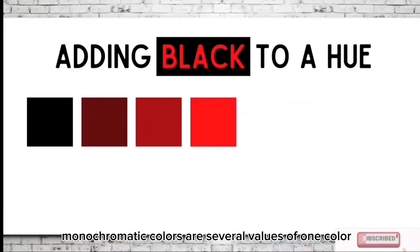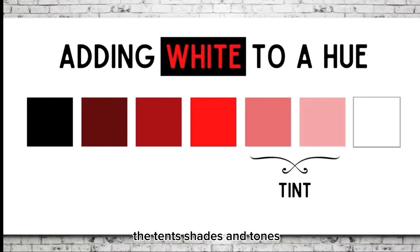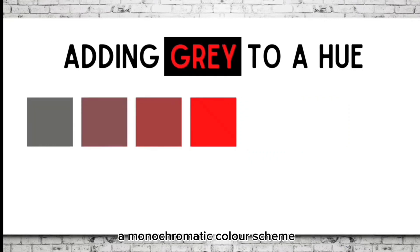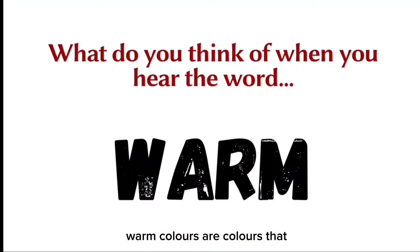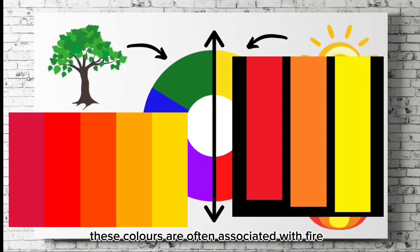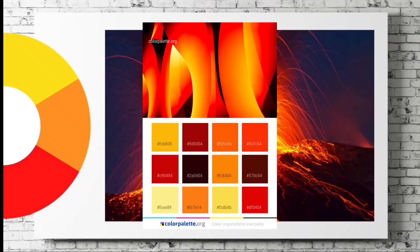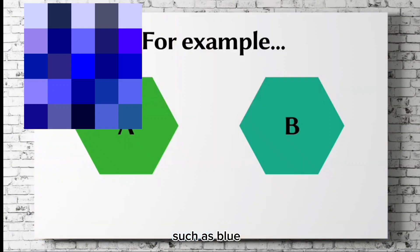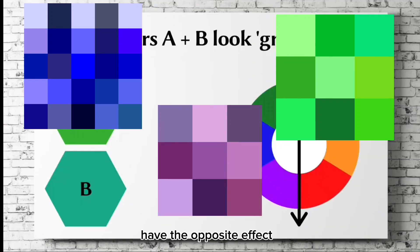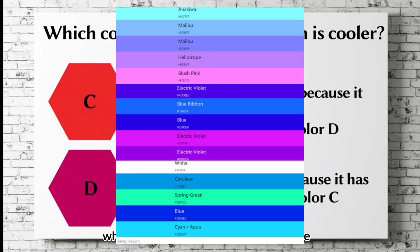Monochromatic colors are several values of one color — all the varieties of a single hue, including tints, shades, and tones — ranging between lighter and darker versions of the base color. Warm colors give the feeling of warmth, such as red, orange, and yellow, associated with fire, the sun, and heat, making an area feel closer and more intimate. Cool colors such as blue, green, and purple have the opposite effect, creating a calming atmosphere while potentially evoking feelings of sadness or indifference.